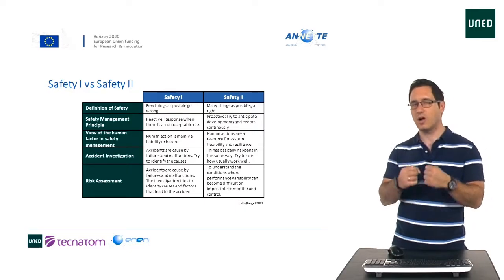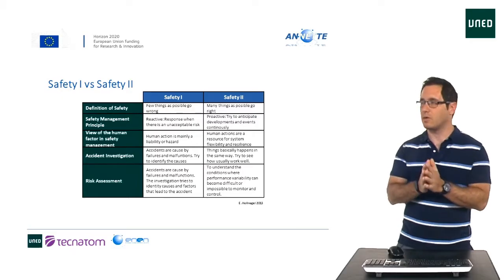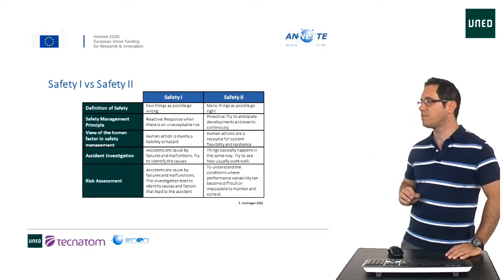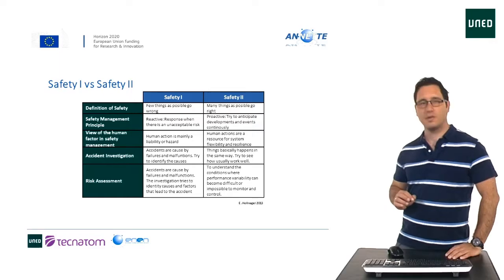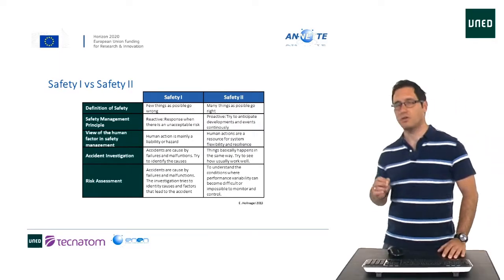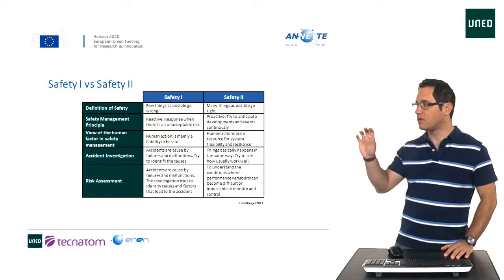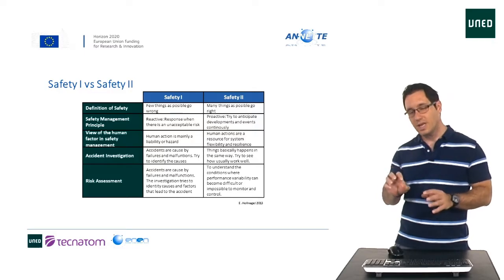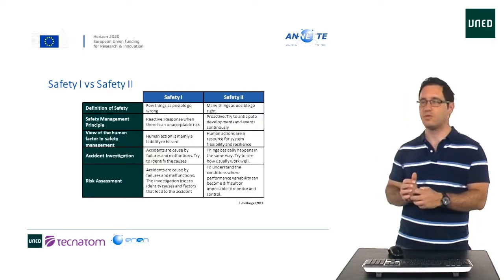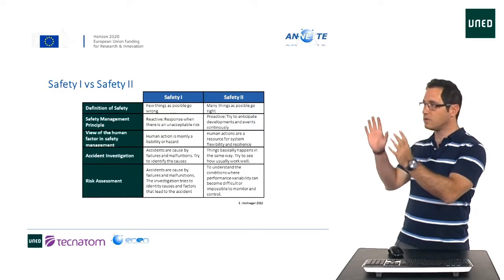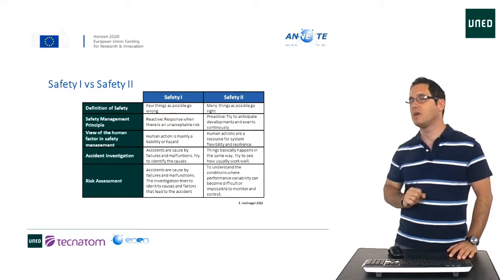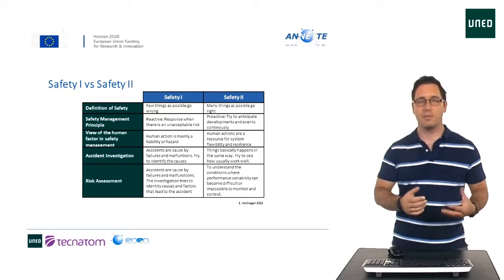So sometimes everything can go wrong without knowing exactly what happened. In Safety II, we have to understand the conditions where performance variability can become difficult or impossible to monitor and control. The risk assessment is going to try to see when it's going to be more difficult to do the daily work, and then anticipate those conditions. This is what Professor Hollnagel defined as Safety II versus what he started to call Safety I, or conventional safety.